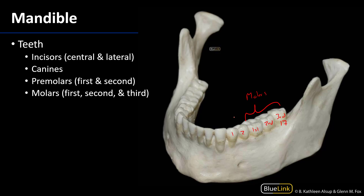Here would be the second premolar and the first premolar, here is the canine, and here are the incisors — the medial and then the lateral. We can go from 17 all the way over to 32. We can see these teeth are in the alveolar arch; the alveolar process surrounds the roots of the teeth. We also have a nice view of the buccal shelf. These are some of the osteological features you'll encounter in the oral cavity. Thank you very much for your time.